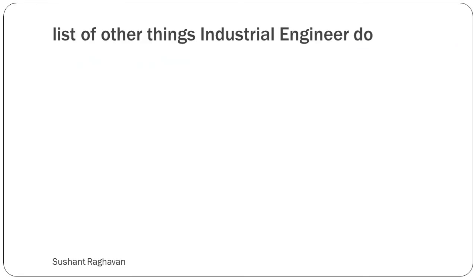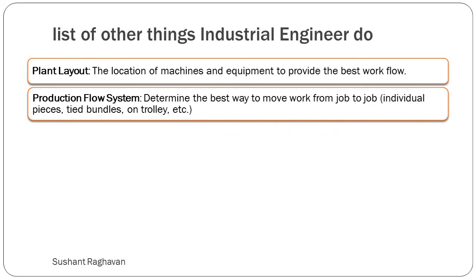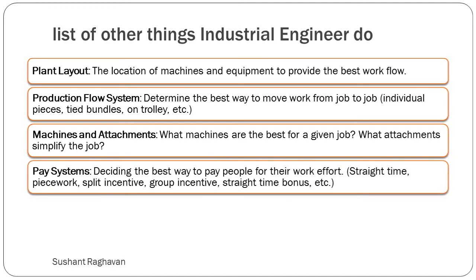Other things industrial engineers do include: plant layout — the location of machines and equipment to provide the best workflow; production flow system — determining the best way to move work from job to job, whether individual pieces, tied bundles, on trolley, etc.; machines and attachments — deciding what machines are best for a given job and what attachments simplify the job; and pay systems — deciding the best way to pay people for their work effort, including straight time, piece work, split incentive, group incentive, or straight time bonus.